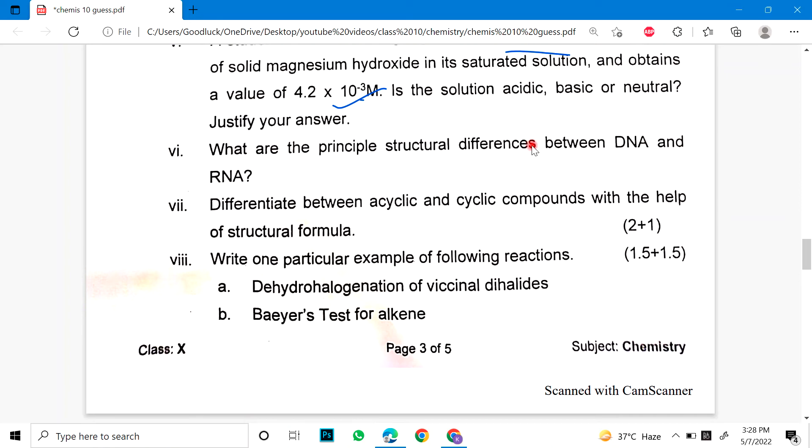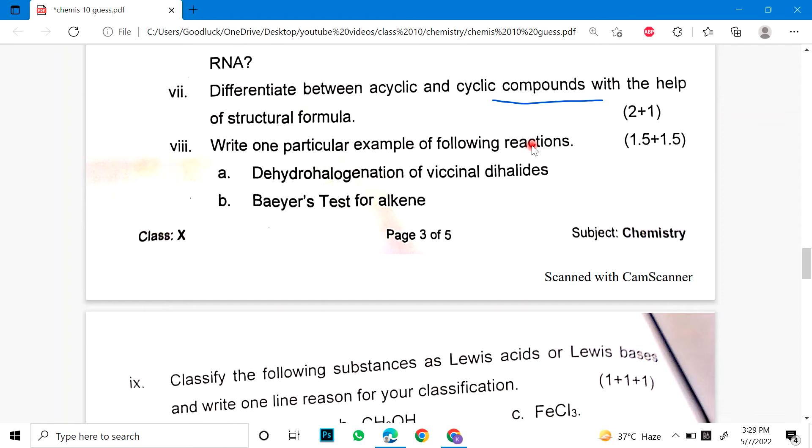Number 6. What are the principal structural differences between DNA and RNA? Number 7. Differentiate between acyclic and cyclic compounds with the help of structure formula. Number 8. Write one particular type of following reaction. Dehydrohalogenation of vicinal dihalide or Baeyer's test for alkene.